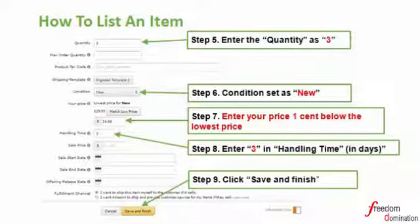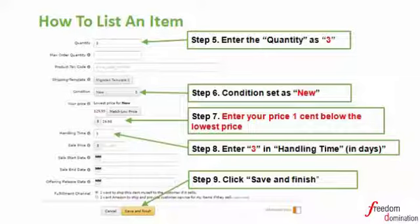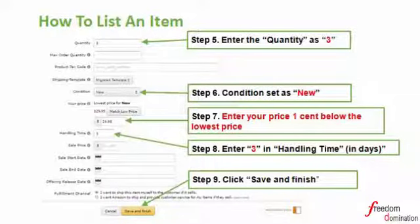Under 'Your Price,' please apply your price one cent lower than the lowest price. Lastly, set the handling time field to three. Handling time means the time between when the buyer places the order and the seller hands the order over to the delivery service. After setting these four particulars properly as instructed, click the 'Save and Finish' button to save your changes.